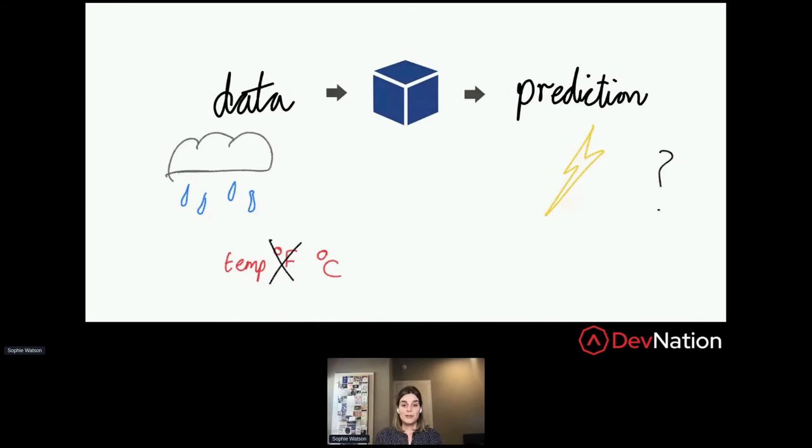So really this example is arguably down to human error - it's us not checking or understanding what the model is expecting and how it's running. But the notion of data drift is more general.